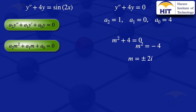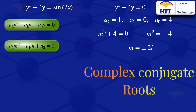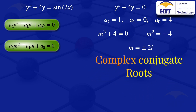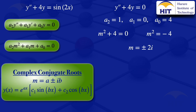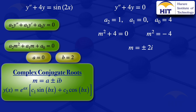The auxiliary equation has complex conjugate roots. When we have complex conjugate roots of the form m = a ± ib, the general solution is e^(ax) multiplied by (c1·sin(bx) + c2·cos(bx)). Comparing our m = ±2i with this form, we see that a = 0 and b = 2. Substituting these values gives the solution c1·sin(2x) + c2·cos(2x).